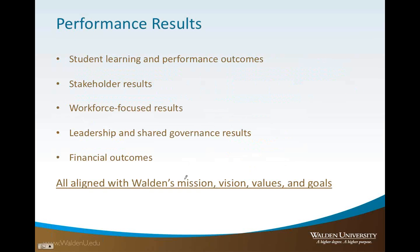In Category 7 of the Baldrige criteria, performance results are segmented into student learning and performance outcomes, stakeholder results and workforce results, and leadership, shared governance, and financial outcomes. Recalling the Kaplan and Norton balanced scorecard model, you might segment your own performance results and line up those different segments according to Walden's mission, vision, values, and goals, balancing those values for all stakeholders involved.